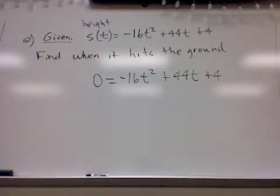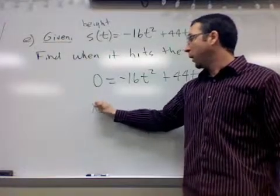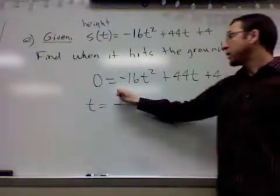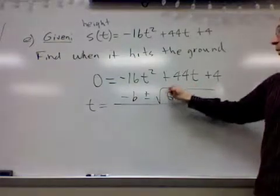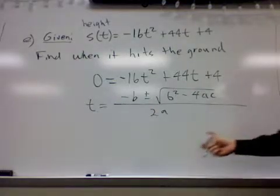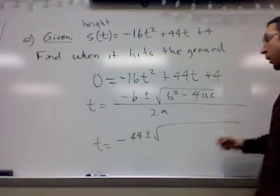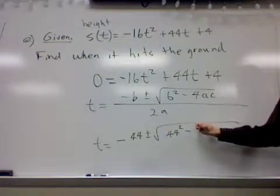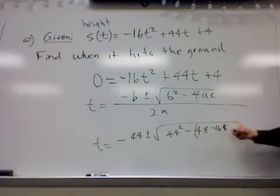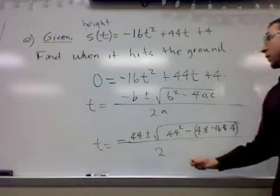You can try to factor this one, but it's not going to be one that you can factor. Instead, you're going to have to use the quadratic formula, and we'll show that off in all its glory. So t in this case is equal to negative b plus or minus the square root of b squared minus 4ac, divided by 2a. If you make the appropriate substitutions, you end up getting that t is equal to negative 44 plus or minus the square root of 44 squared minus 4 times negative 16 times 4, all divided by 2 times negative 16.